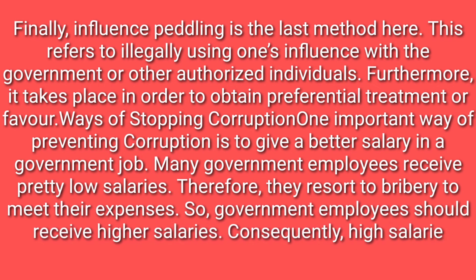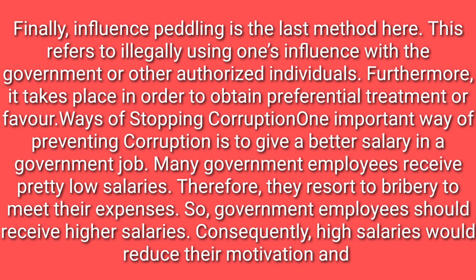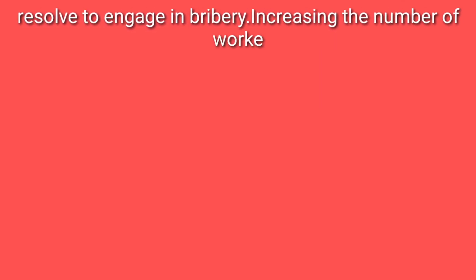Ways of Stopping Corruption. One important way of preventing corruption is to give better salaries in government jobs. Many government employees receive pretty low salaries. Therefore, they resort to bribery to meet their expenses. So, government employees should receive higher salaries. Consequently, higher salaries would reduce their motivation to engage in bribery.